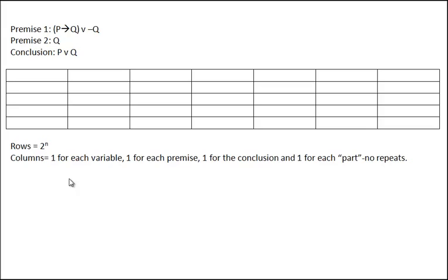Determining the number of columns is a bit trickier. There'll be one for each variable, one for each premise, one for the conclusion, and one for each part. But there are no repeats. For example, in this case we have q as a variable and also as a premise, but we won't put that up there twice — that would just be wasting space and time.